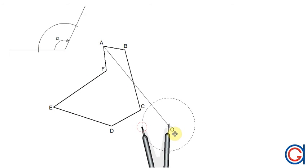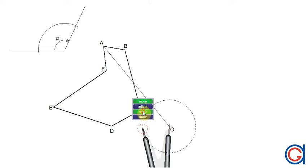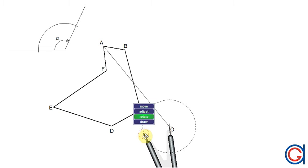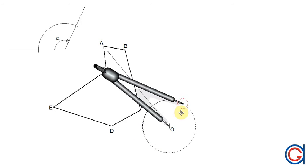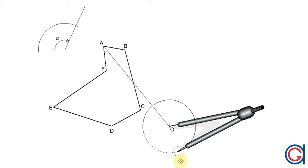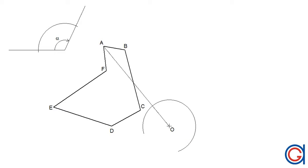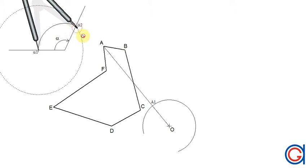To continue, with the same radius and setting the compass on the point O, we are going to draw a large arc as shown. We name the points on the angle alpha as alpha 1 and alpha 2, and the new point we have obtained with the large arc as A1, as shown here.